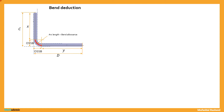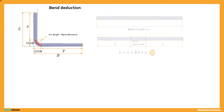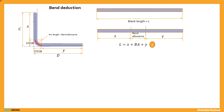Let us understand the concept of bend deduction, the difference between bend deduction and bend allowance, and the relation between them. Here is an example of a bent part where the bend angle and flange angle are both 90 degrees. C and D indicate the total leg lengths, and OSSB is given as shown — it is the same for both sides. X and Y indicate leg length 1 and leg length 2. Now let us consider the blank length for this kind of bend as L.